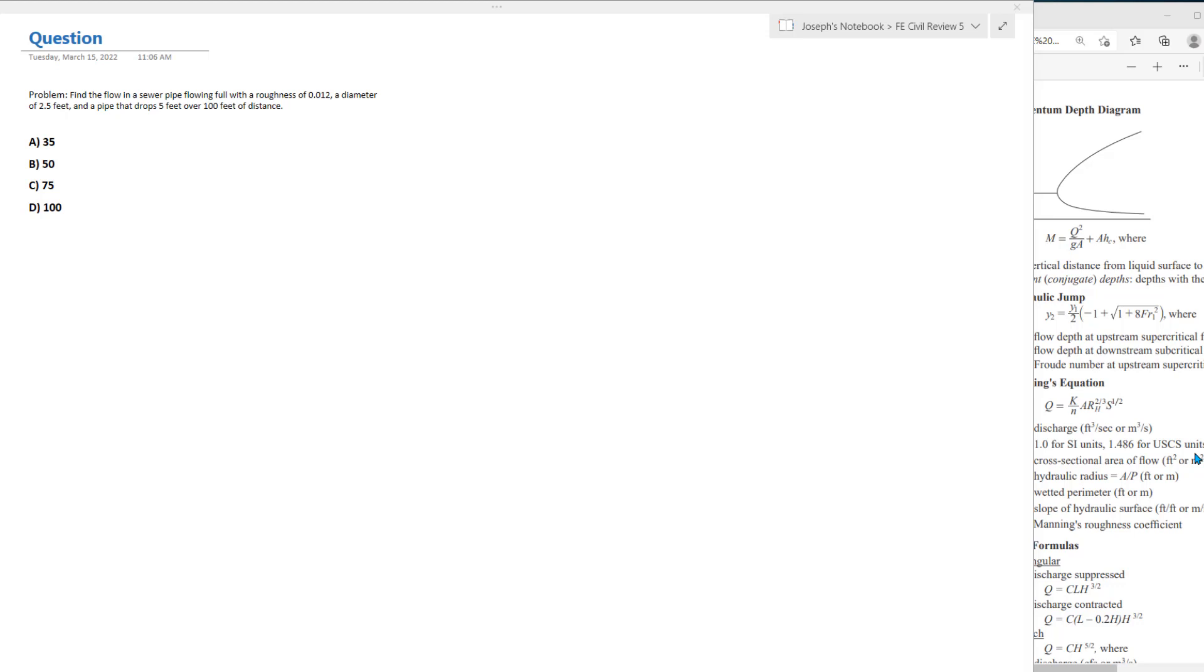So it says here, find the flow in a sewer pipe flowing full with a roughness of 0.012, a diameter of 2.5 feet, and a pipe that drops 5 feet over 100 feet of distance. There's a lot of variables given here. When I hear full sewer pipe, I'm thinking Manning's equation.